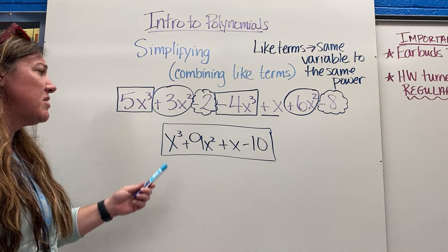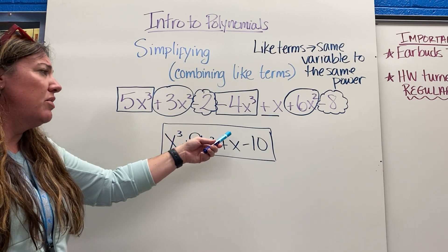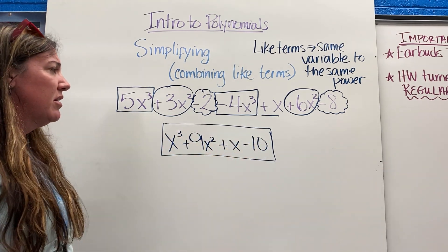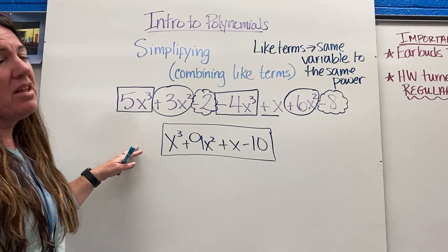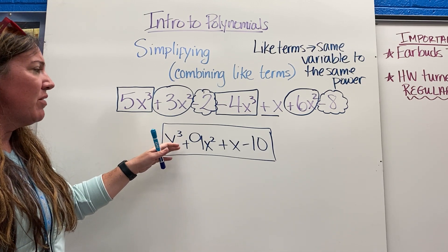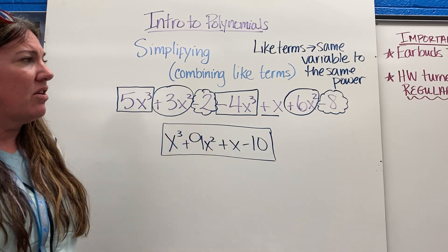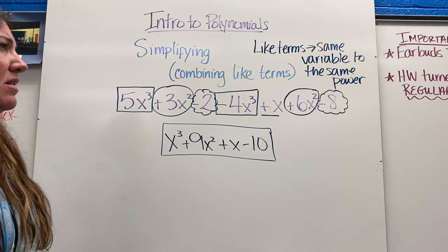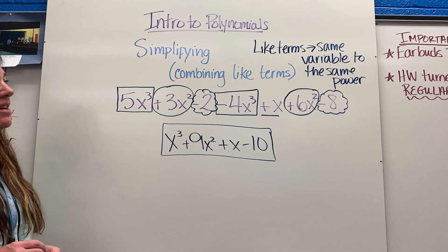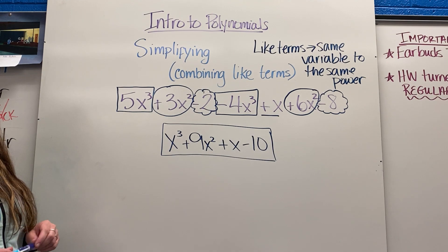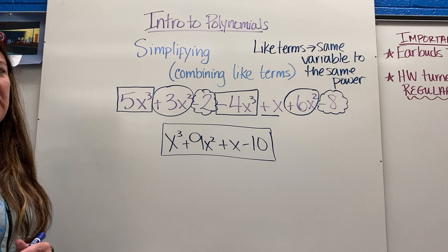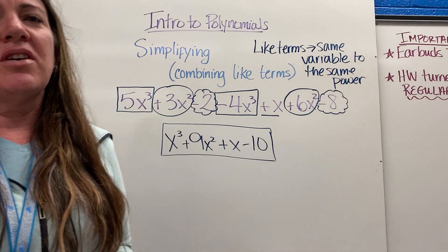Notice how the exponents go 3, 2, then 1, then the regular number with no variable. With polynomials you want to put the highest exponent first and cascade down — that's standard form. You're going to work on adding and subtracting today, and it's really the same thing: a lot of simplifying and combining like terms. Enjoy the next part!